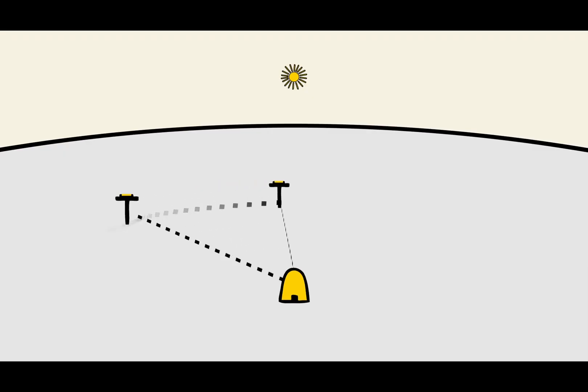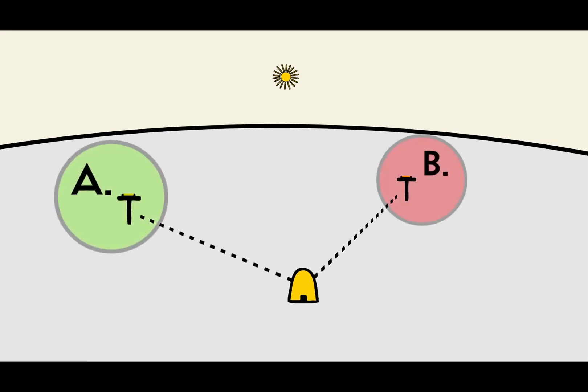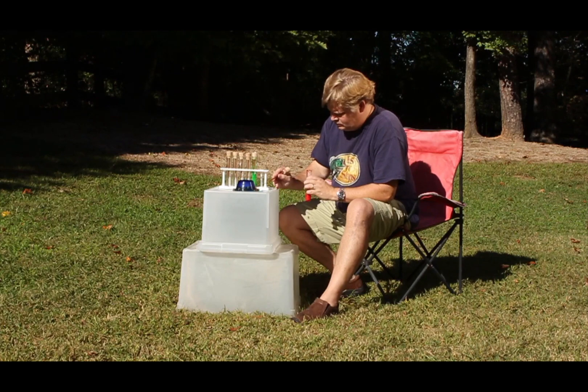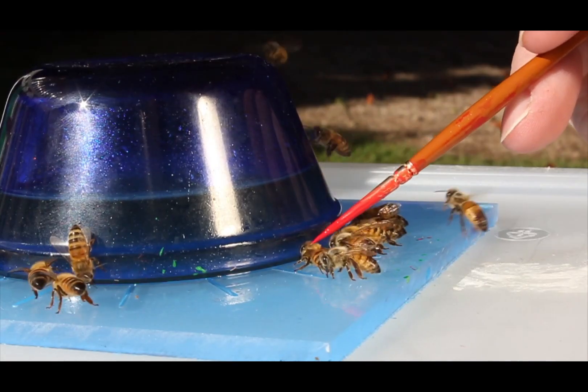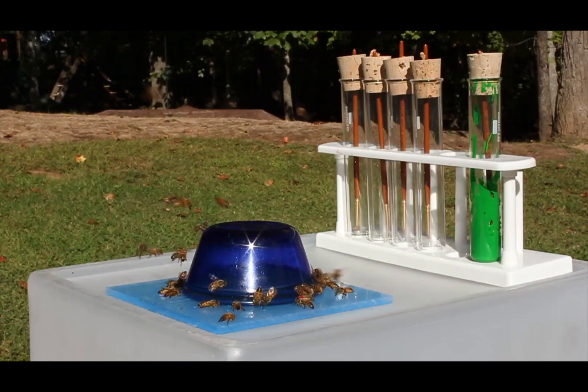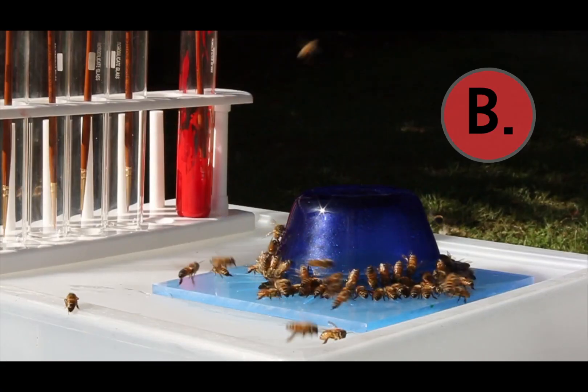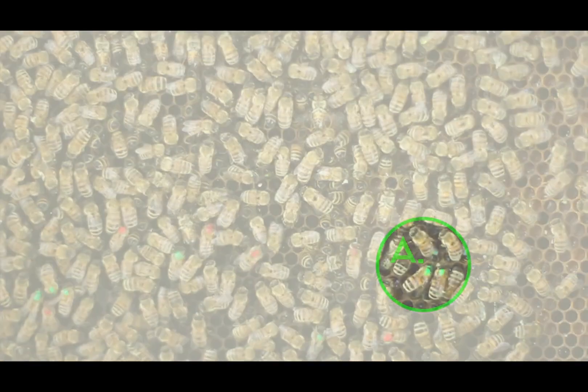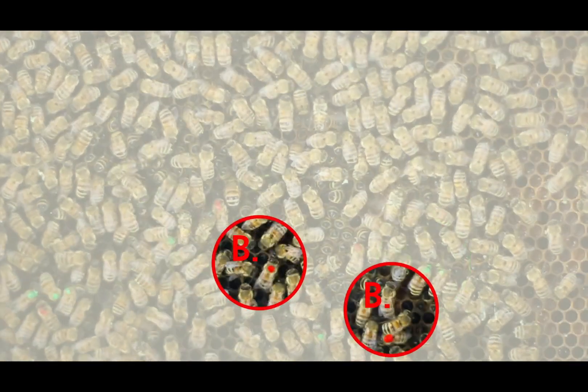Two feeders are placed in different directions away from the hive. At each location, visiting honeybees are marked with a small spot of paint. A separate colour of paint is used at each station, so when a bee returns to the hive, it can easily be determined which feeding site it visited.